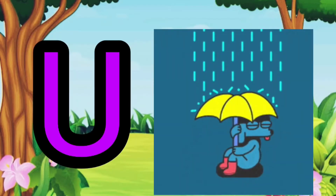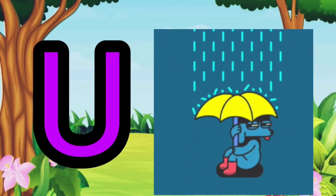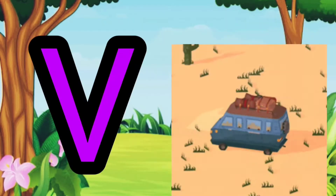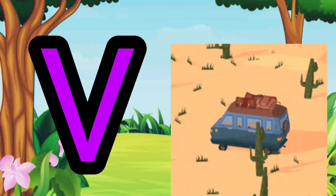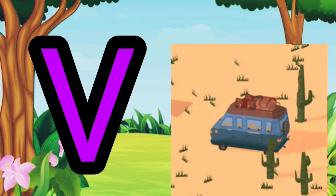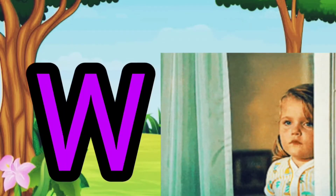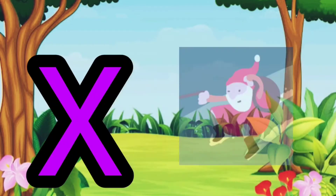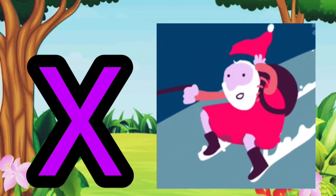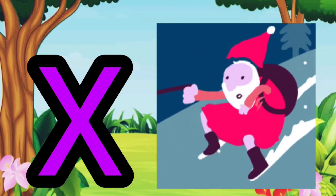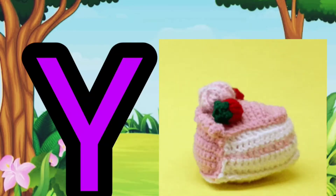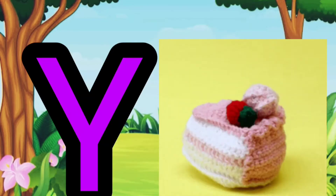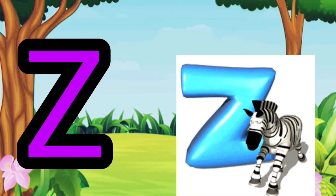U for umbrella, V for van, W for window, X for egg mass, Y for yarn, Z for zebra.